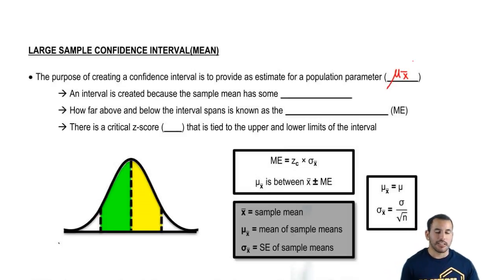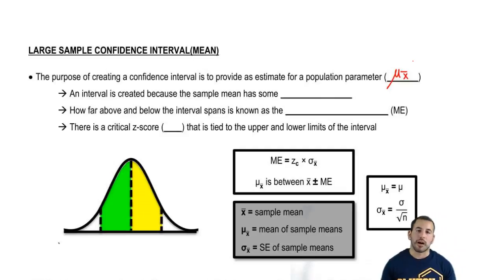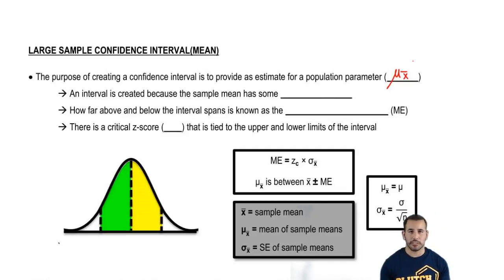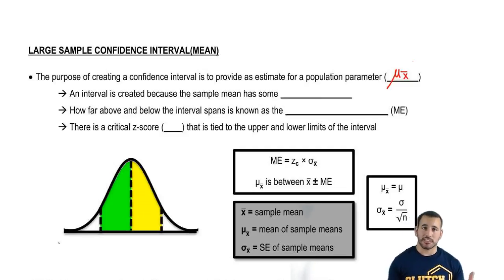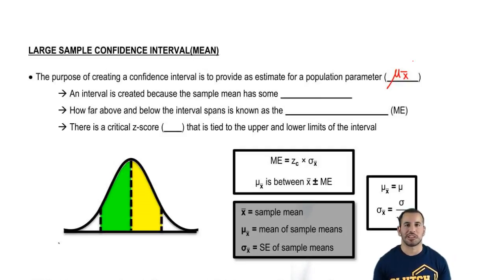We're talking about the population, and a parameter is basically the population version of anything. For example, the sample mean's parameter would be the population mean. Sample standard deviation — the parameter is population standard deviation. So that's basically a parameter, just a fancy way of saying the population version of whatever we're talking about.